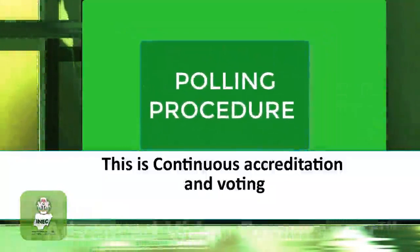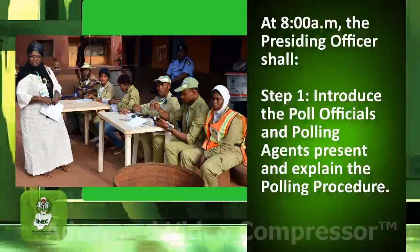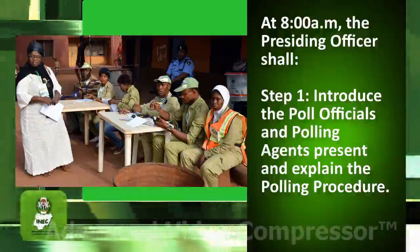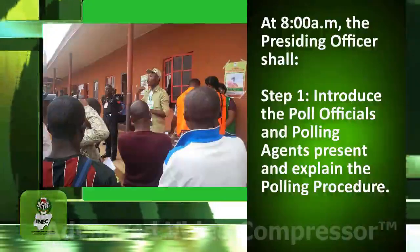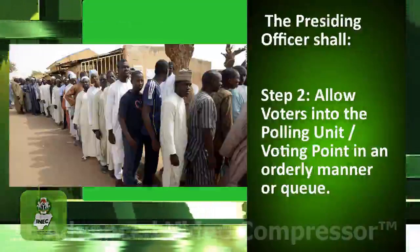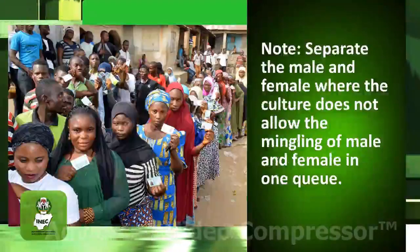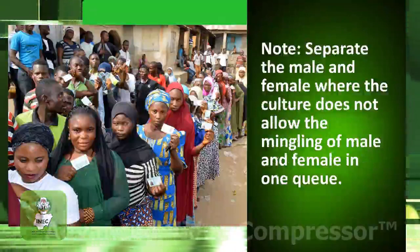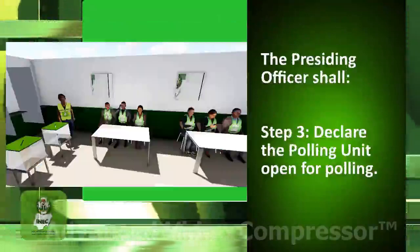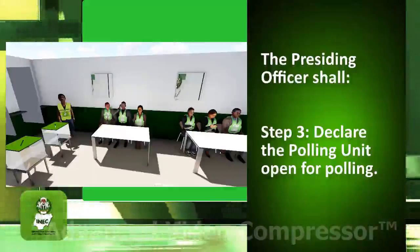Module 5 – Polling Procedure: continuous accreditation and voting. At 8 AM, the Presiding Officer shall: Step 1 – Introduce the poll officials and polling agents present and explain the polling procedure. Step 2 – Allow voters into the polling unit or voting point in an orderly manner or queue. Note: separate the male and female queues where the culture does not allow mingling in one queue. Step 3 – Declare the polling unit open for polling.